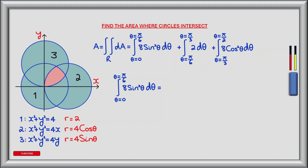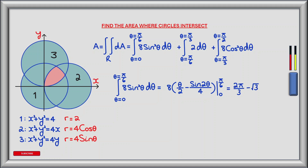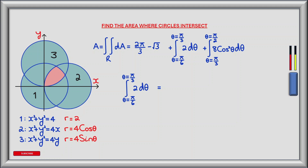We can now work on the outer integrals. The first is the integral from theta equals 0 to theta equals pi by 6 of 8 sin squared theta d theta. The anti-derivative is 8 times the bracket of theta divided by 2 minus sin 2 theta divided by 4. Evaluated between 0 and pi by 6, this gives 2 pi divided by 3 minus the square root of 3. For the second outer integral we integrate 2 d theta between theta equals pi by 6 and theta equals pi by 3, with anti-derivative 2 theta, giving a value of pi by 3.